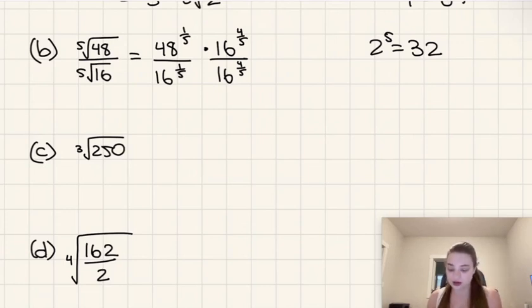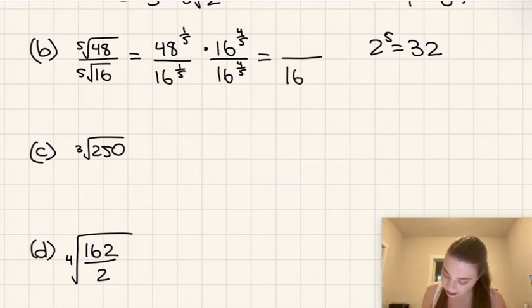Because I recall that whenever we multiply two exponents with the same base, we add up those exponents. So then we're going to get 16 to the power of 5/5 in the denominator. And then in the numerator, we're going to have just fifth root of 48 and then fifth root of 16 to the power of 4 like that.